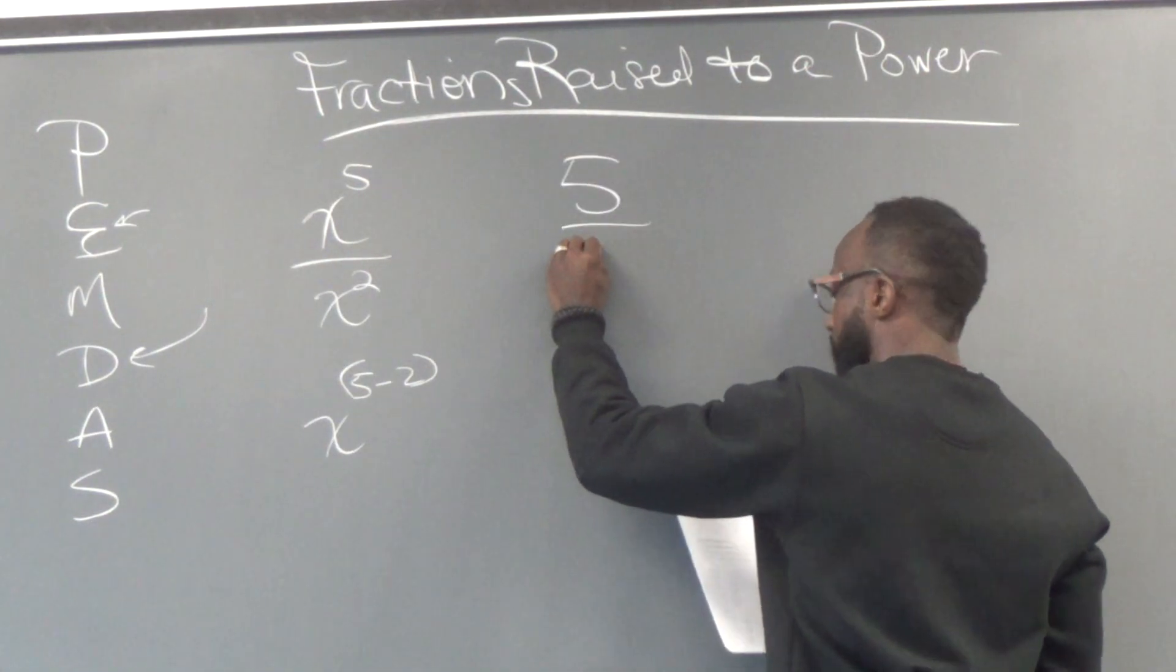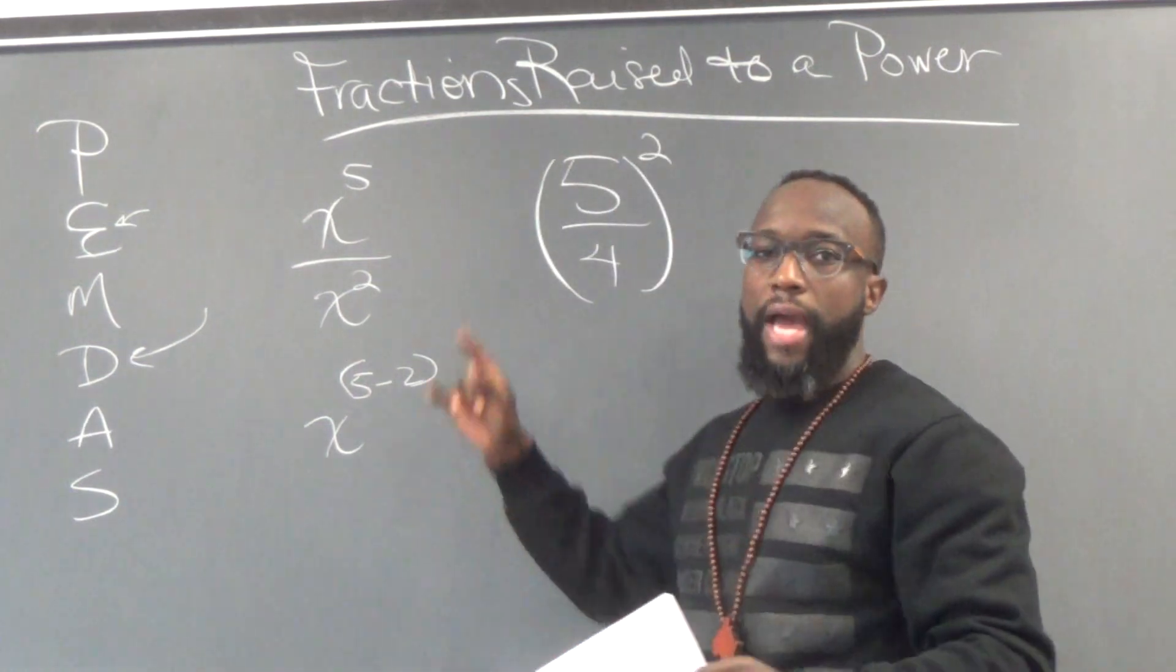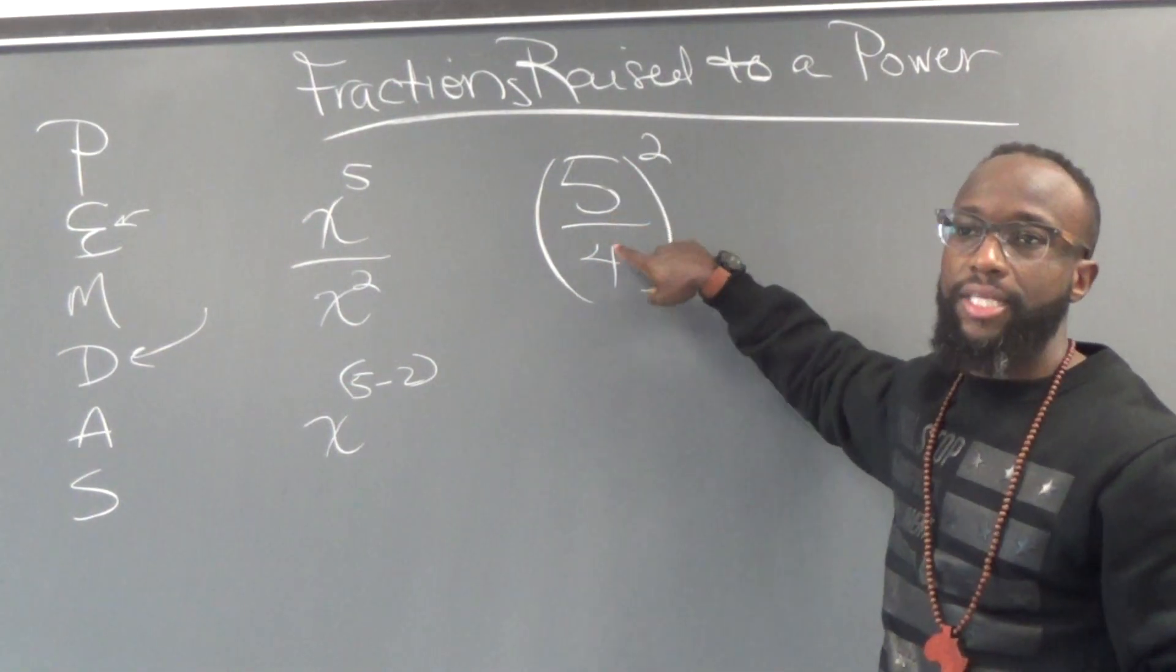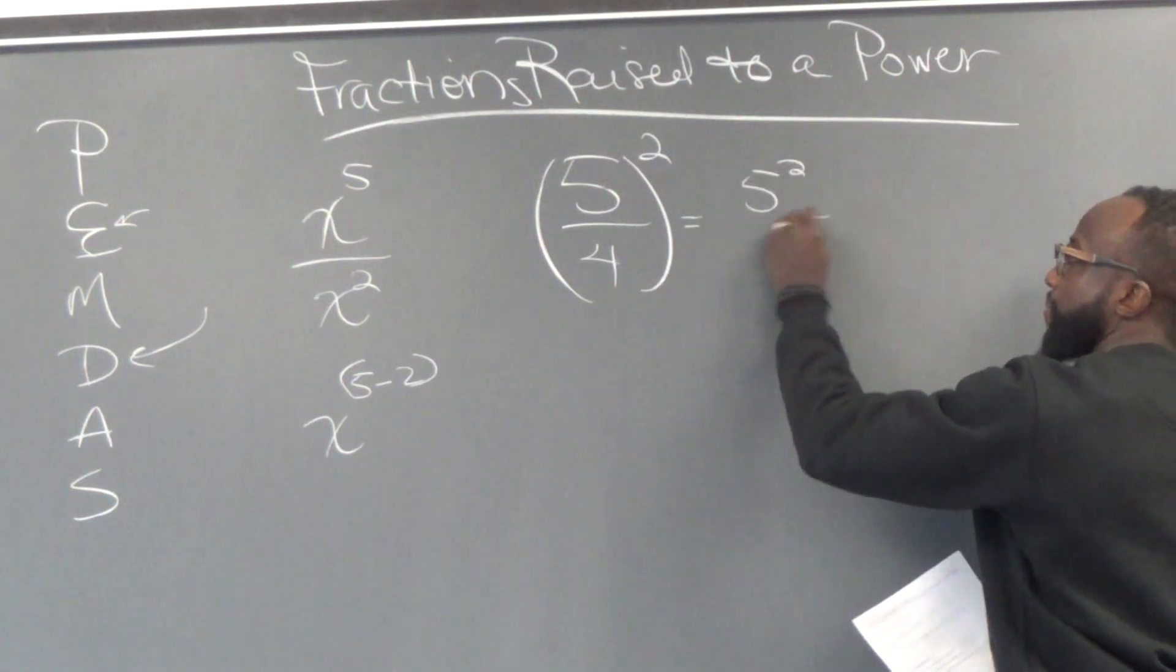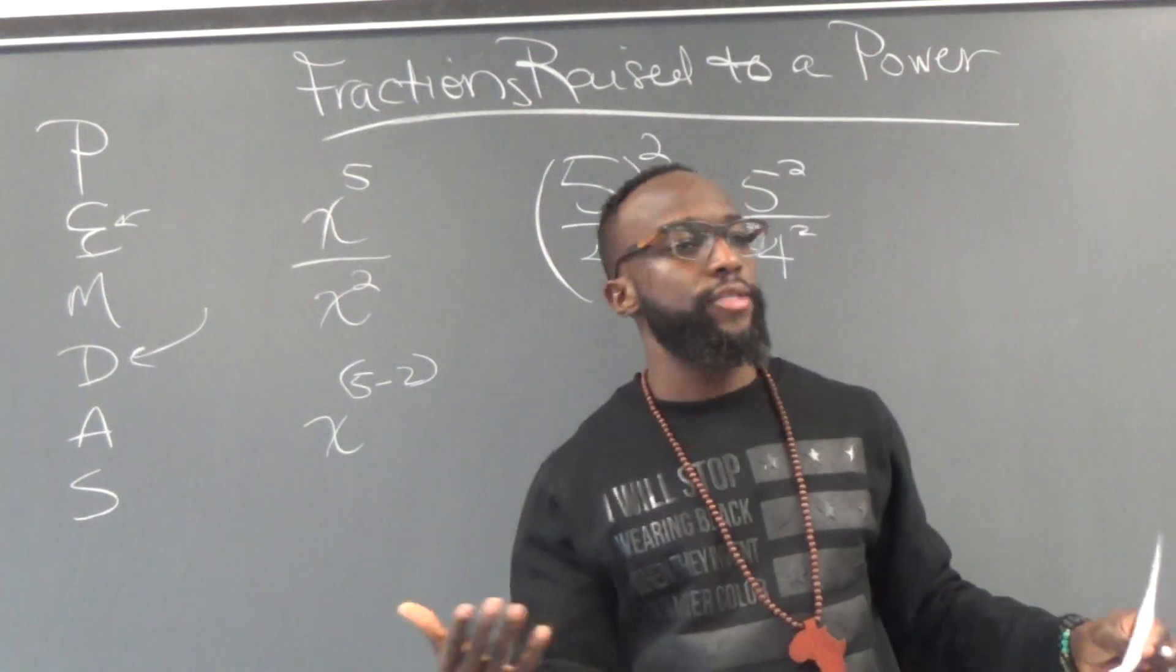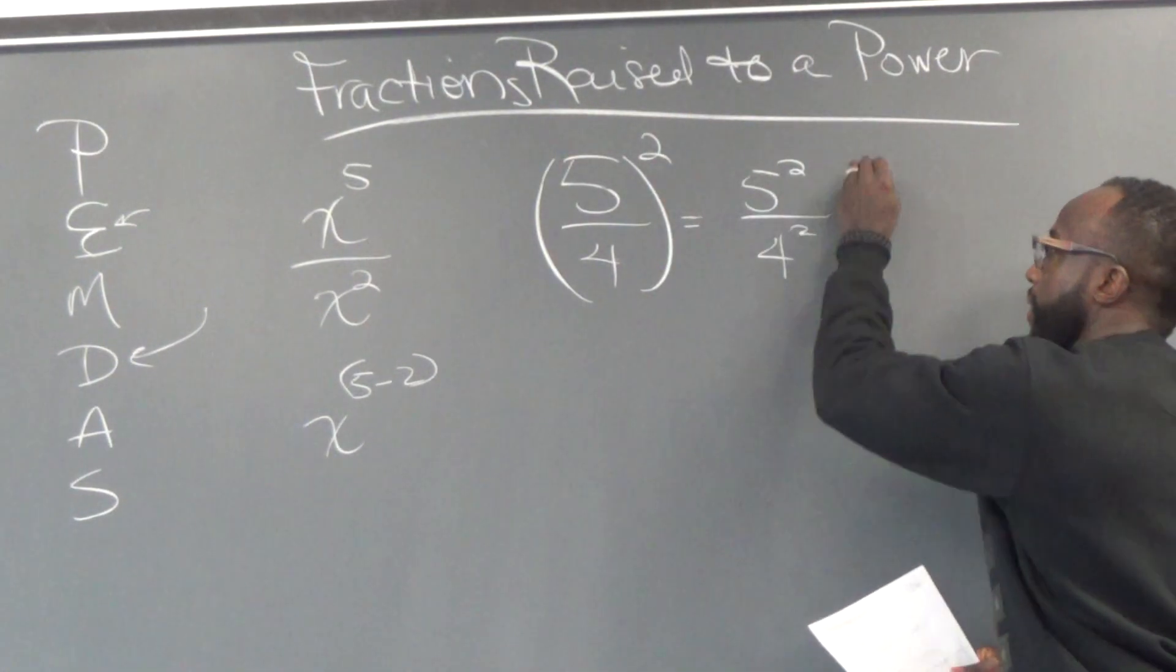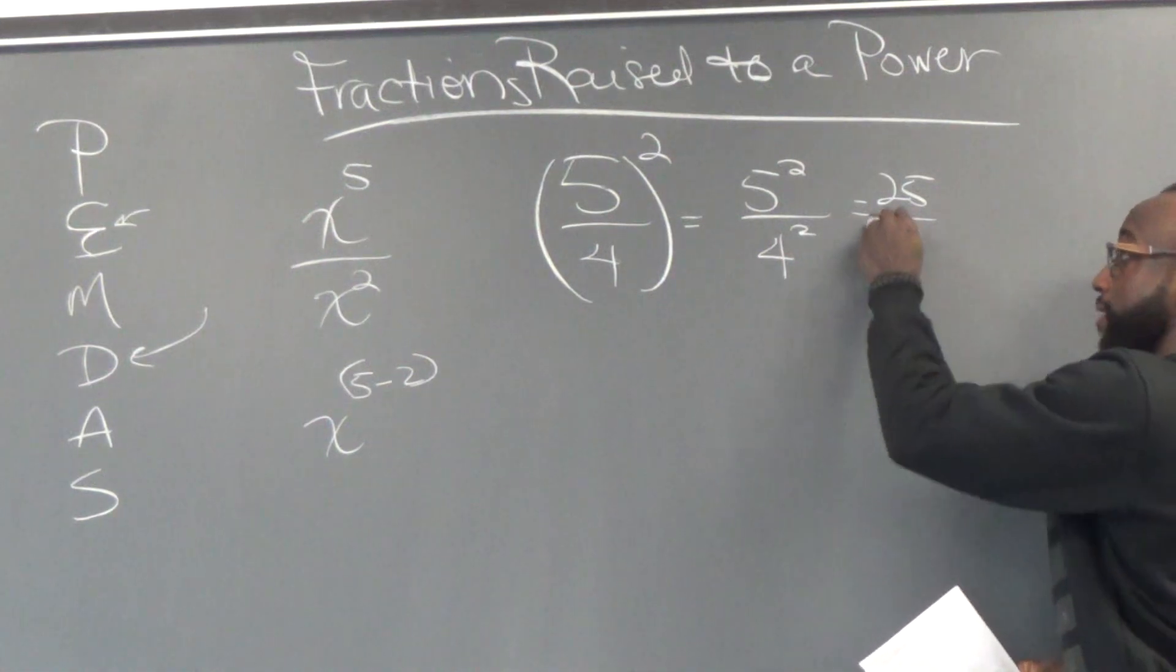If we use this number, five over four raised to the second power. Whenever you have a fraction raised to a power, that means that both numbers, the numerator and the denominator, get that exponent. So what happens is you have five to the second power and four to the second power. So in this case, you end up with 25 over what? Sixteen.